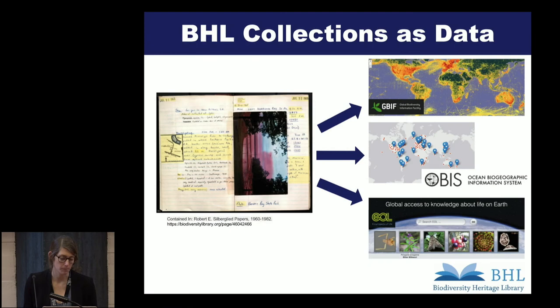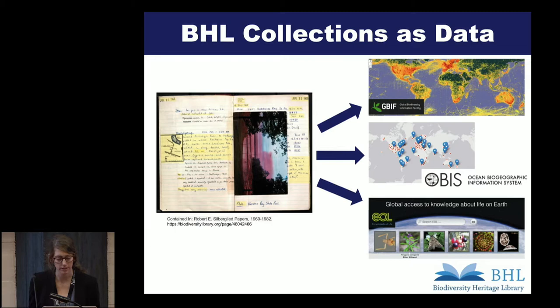These repositories are the Global Biodiversity Information Facility, or GBIF, the Ocean Biogeographic Information System, OBIS, and the Encyclopedia of Life, which Alicia already showed you. My idea was: is it possible, useful, or sustainable to extract some of this vital research data — like species occurrence events, which is a record of where and when a particular taxon was observed and recorded — and then transform that into a format or schema that can be understood by these aggregators.